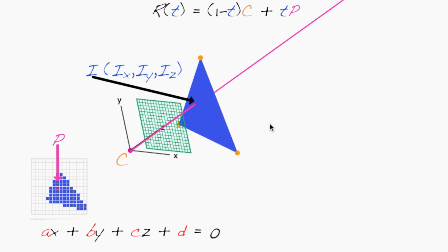The intersection point I we're looking for is in the plane of the triangle, meaning that aIx + bIy + cIz + d = 0.